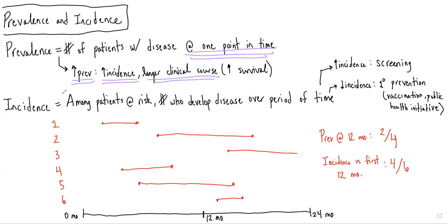Incidence, on the other hand, is looking at among patients at risk, so among patients who don't already have the disease, how many will develop the disease over a period of time.